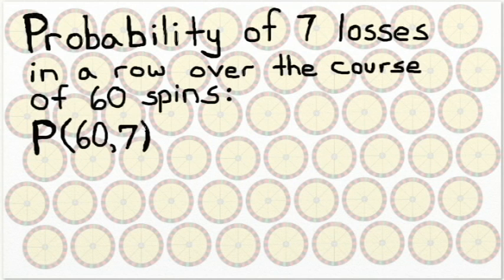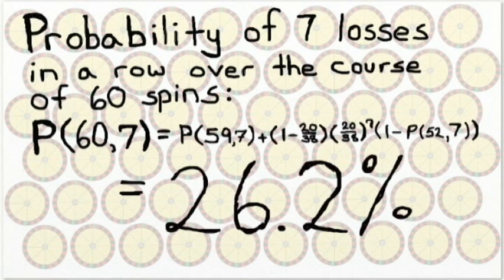Let's assume you sit down at a table for more than just 7 spins. If you're there for an hour or two, you could feasibly see 60 spins. And the odds of getting a string of 7 losses or more over the course of 60 spins jumps up to 26.2%.